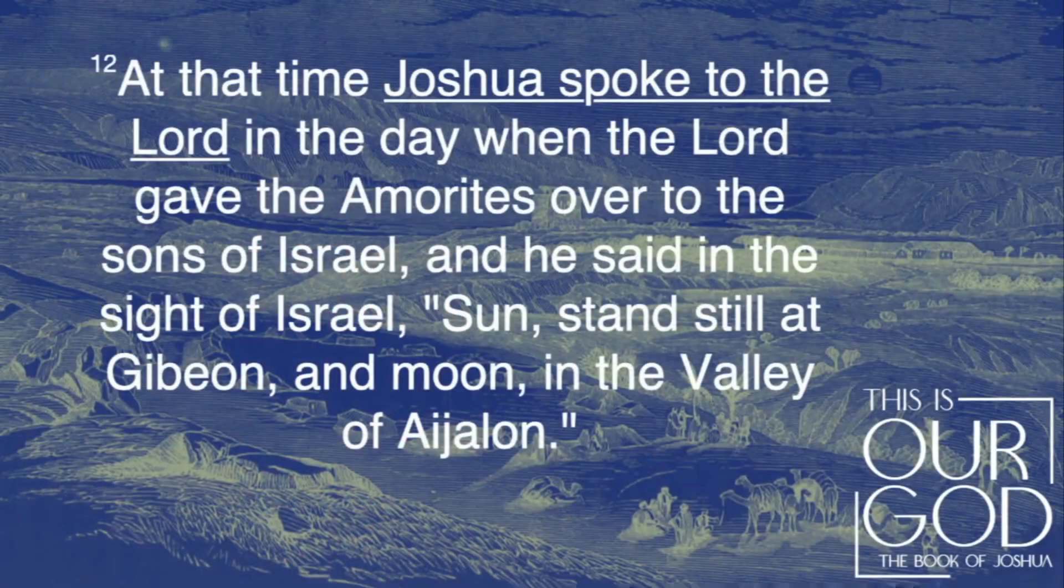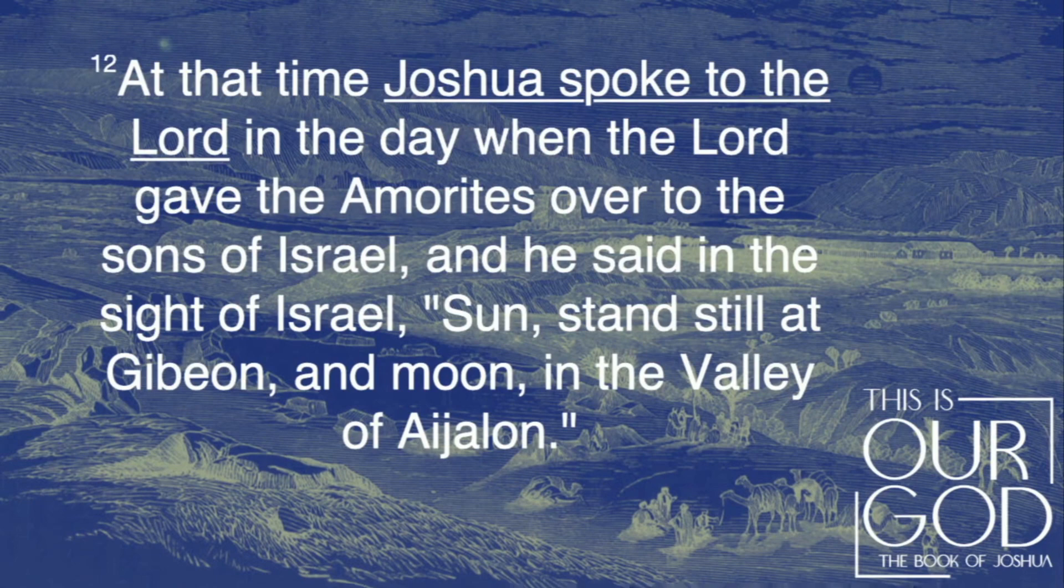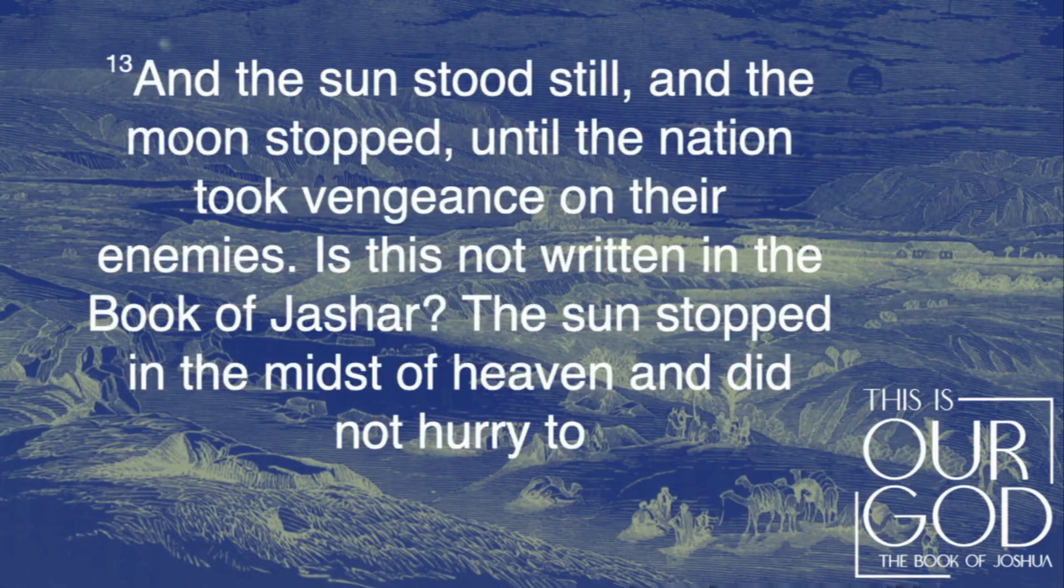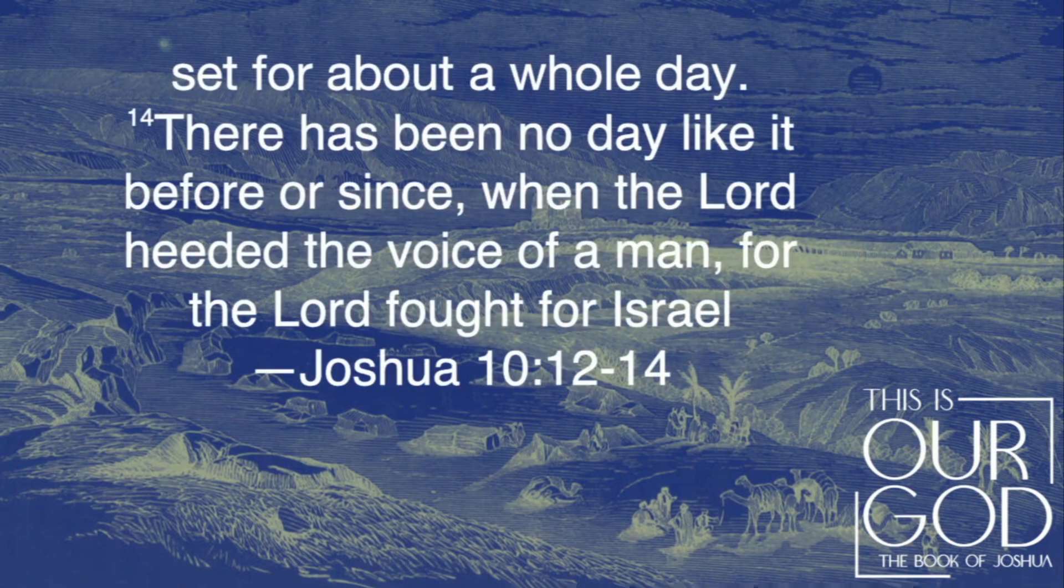At that time, Joshua spoke to the Lord. He spoke to the Lord. That's prayer. In the day when the Lord gave the Amorites over to the sons of Israel, and he said in the sight of Israel, Sun, stand still at Gibeon and moon in the valley of Ejelon. And the sun stood still and the moon stopped until the nation took vengeance on their enemies. Is this not written in the book of Jashar? The sun stopped in the midst of heaven and did not hurry to set for about a whole day.